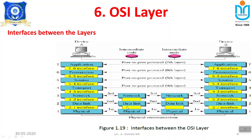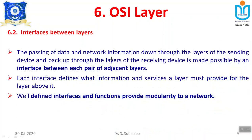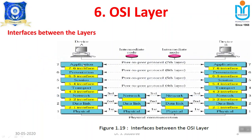This is the basic interface between layers. Passing data and network information down through the layers of the sending device and back up through the layers of the receiving device is made possible by an interface between each pair of adjacent layers. Each interface defines what information and services a layer must provide for the layer above it. Well-defined interfaces and functions provide modularity to a network — each layer has its own functionality considered as a module, and you cannot skip any module.